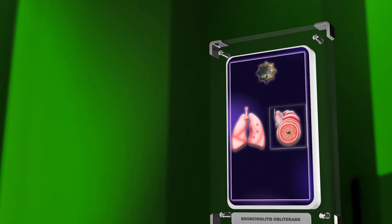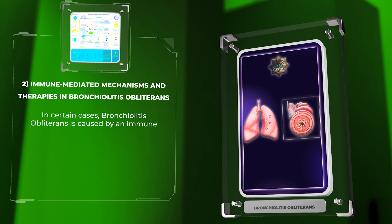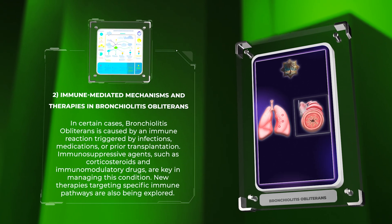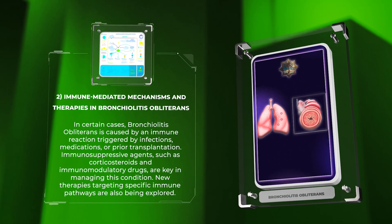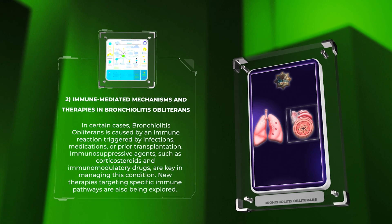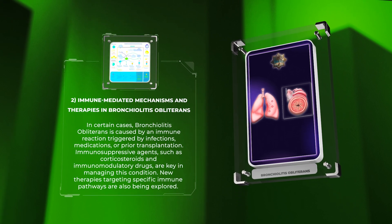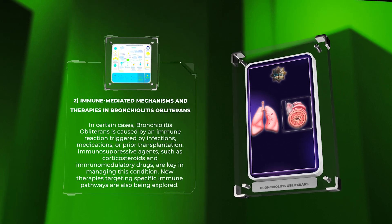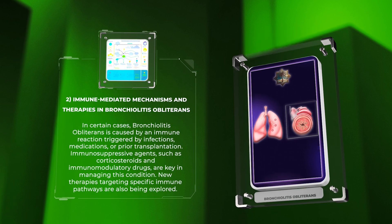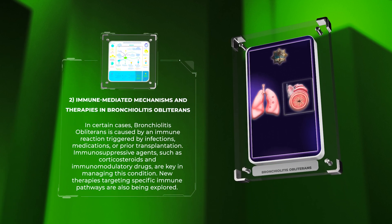In certain cases, bronchiolitis obliterans is caused by an immune reaction triggered by infections, medications, or prior transplantation. Immunosuppressive agents, such as corticosteroids and immunomodulatory drugs, are key in managing this condition. New therapies targeting specific immune pathways are also being explored.